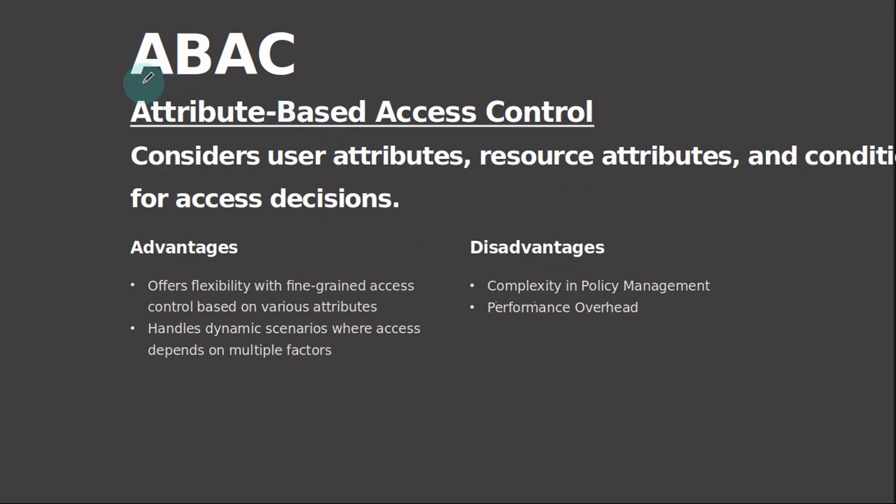Let's move on into ABAC — attribute-based access control — which considers user attributes, resource attributes, and conditions for access decisions. ABAC offers flexibility with fine-grained access control based on various attributes. It allows for highly granular access control by considering multiple attributes when making access decisions. These attributes can include user attributes — for example, role, department, clearance level — resource attributes such as sensitivity and classification, environmental attributes such as time of day, location, and any other relevant context.